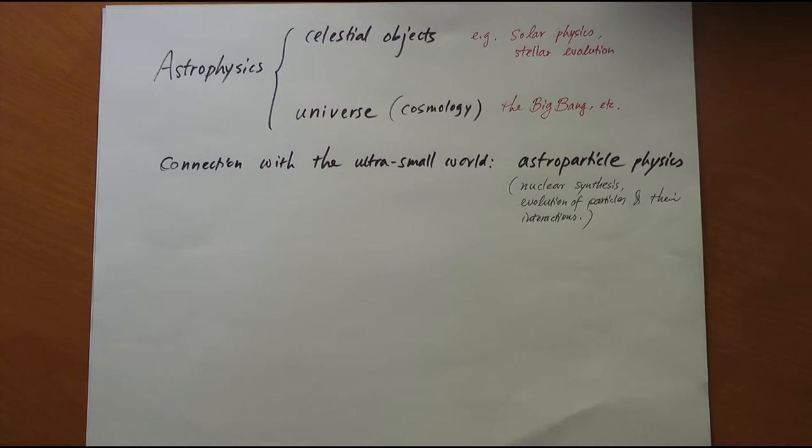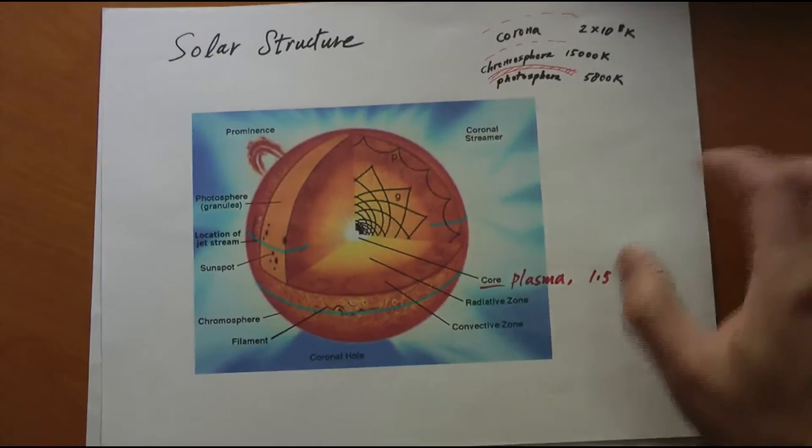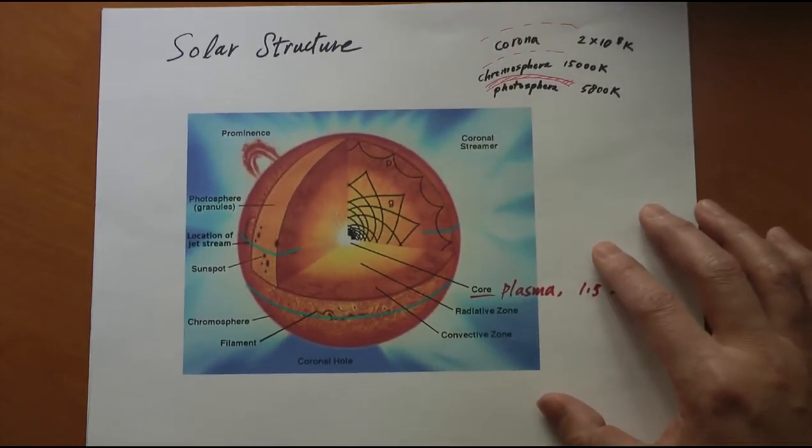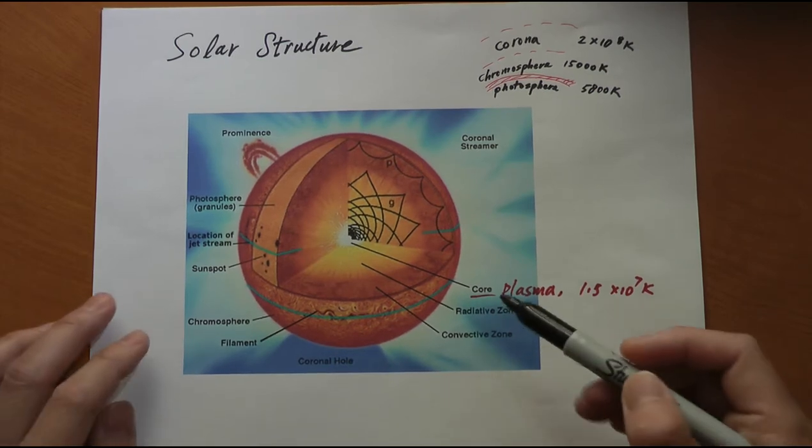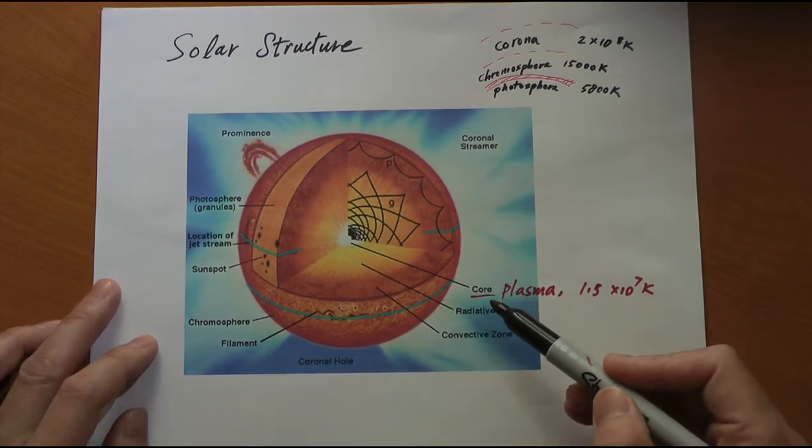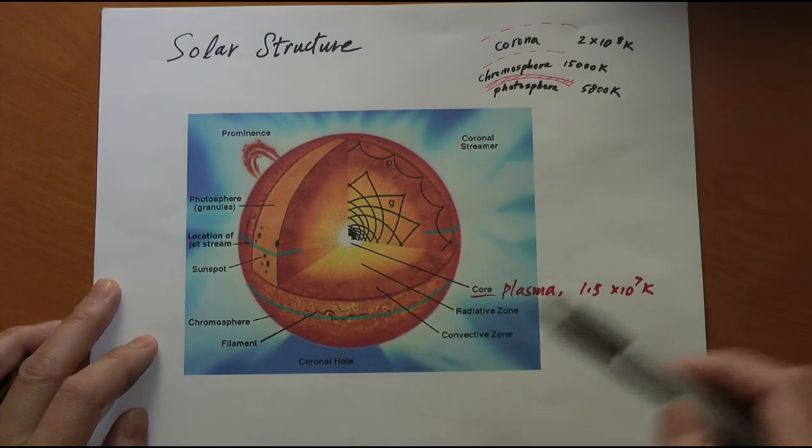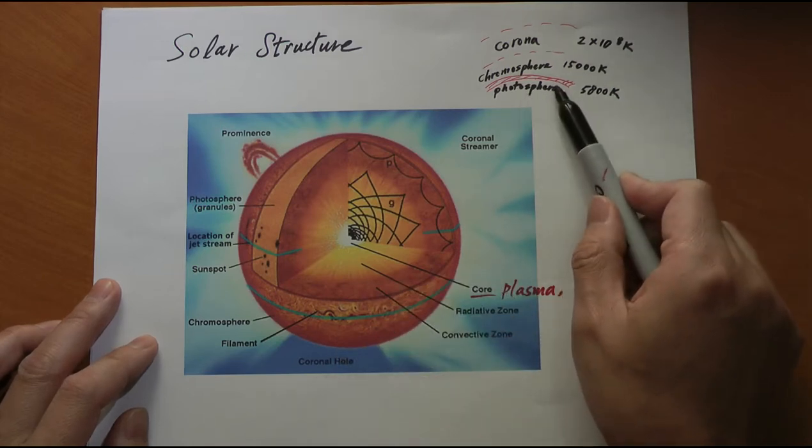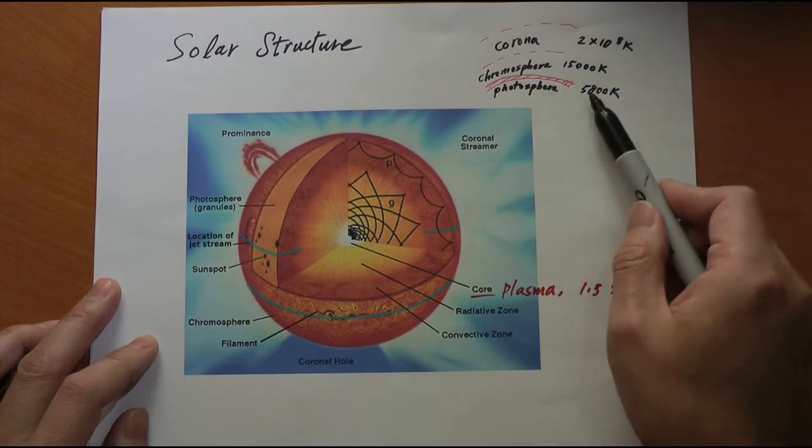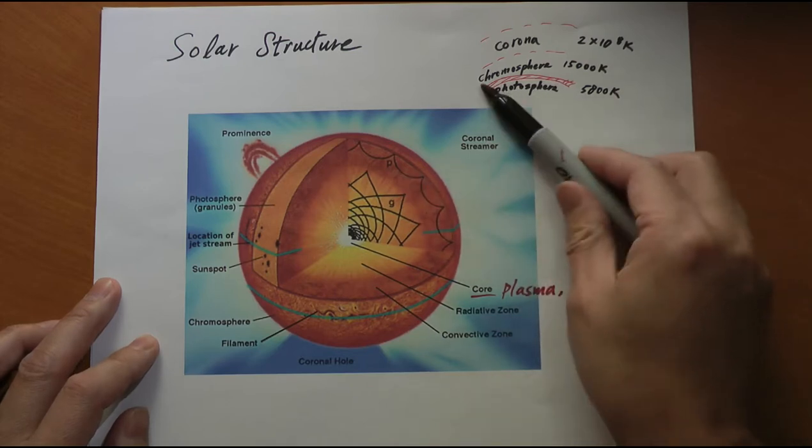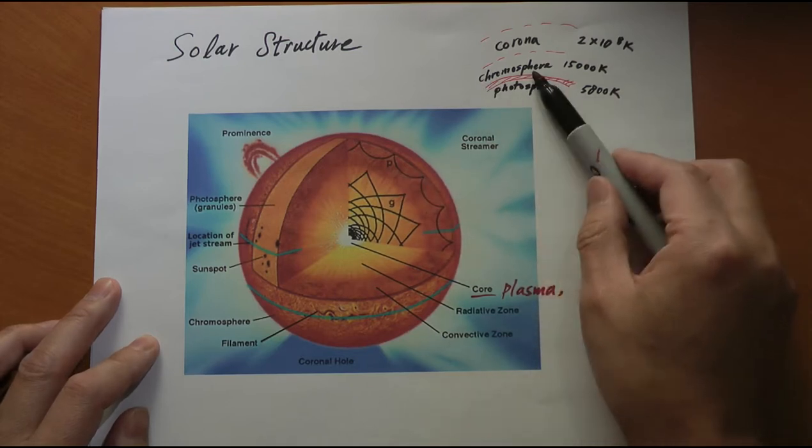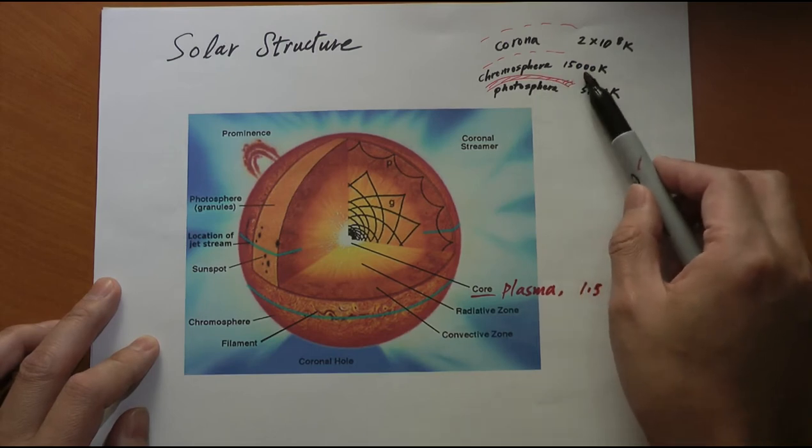For celestial objects, we are going to use our sun as an example. First, the solar structure. The sun has different layers, and what we can see, the visible part of the sun, is a very thin layer called the photosphere. The photosphere has a temperature of about 5,800 Kelvin. Above the photosphere, there is a layer called chromosphere, at a higher temperature, 15,000 Kelvin.